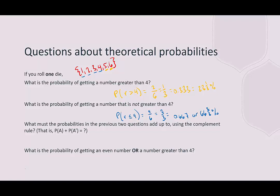The probabilities in the two previous questions use the complement. The complement is all of the things in the sample space that are not favorable to that event. So 'not greater than four' — its complement is 'less than or equal to four.' The probabilities of complements must add up to one. For example, three out of six were even plus three out of six were odd equals six out of six, or 100%. Similarly, two out of six greater than four plus four out of six not greater than four equals 100%.